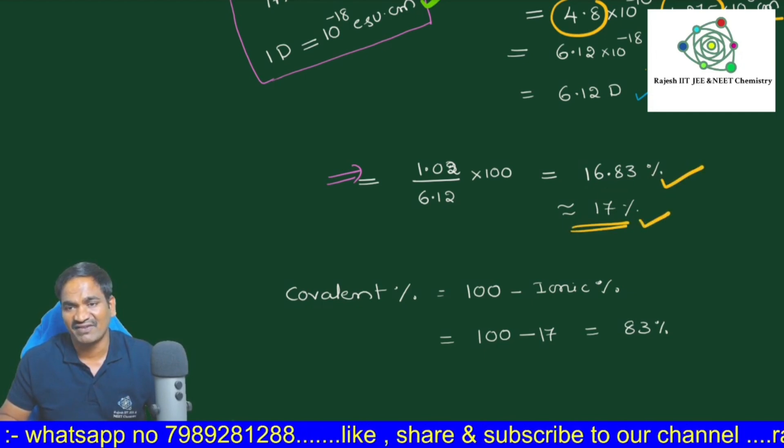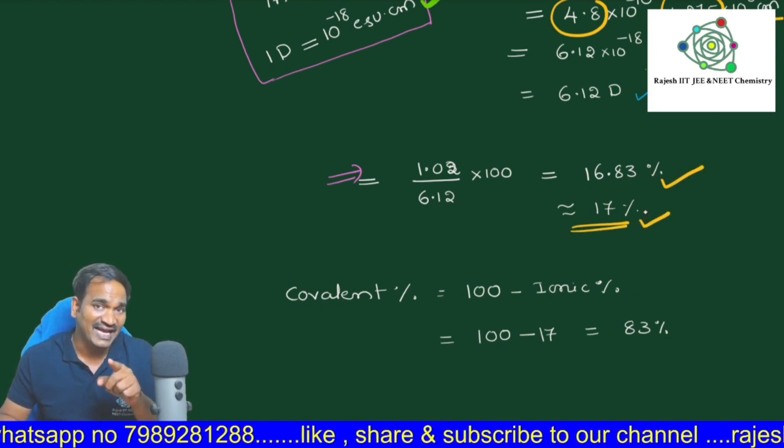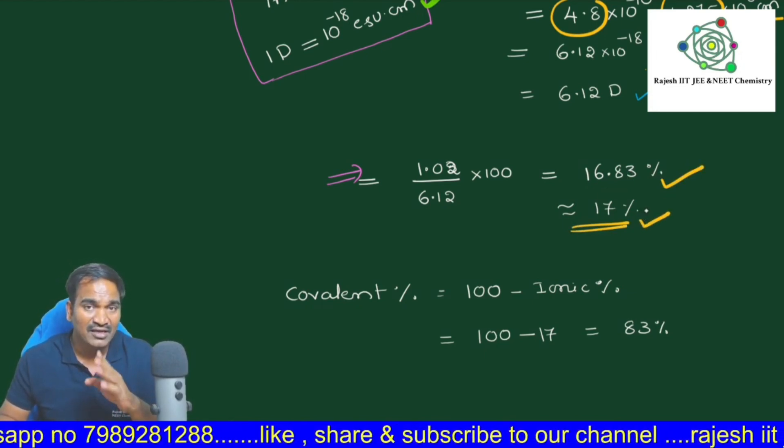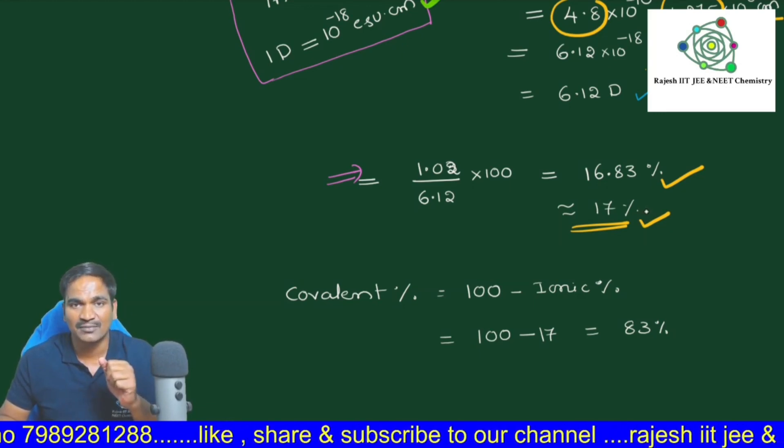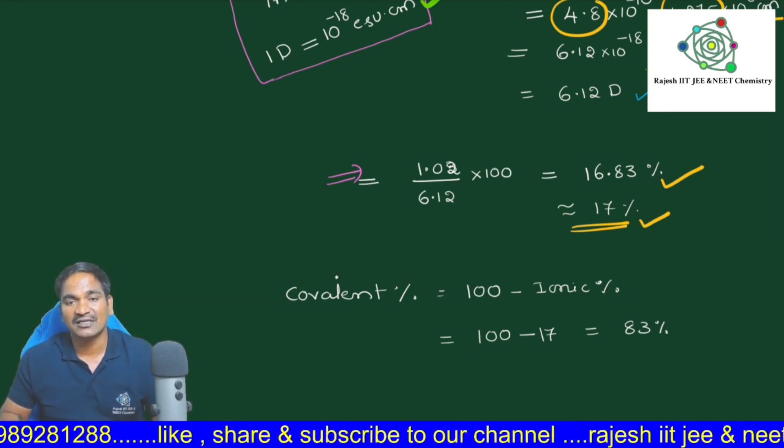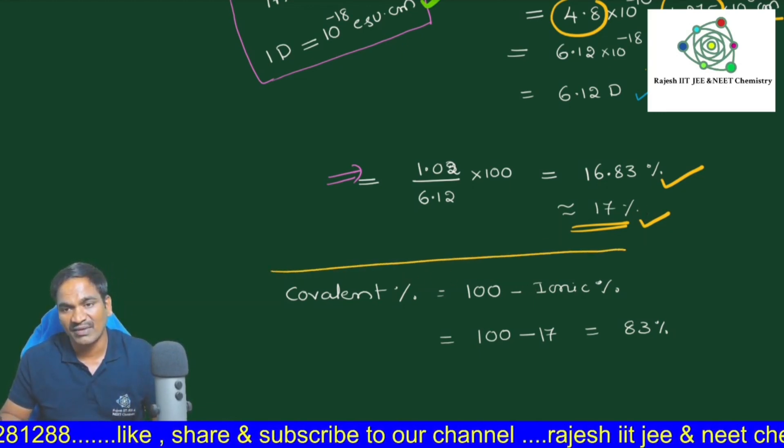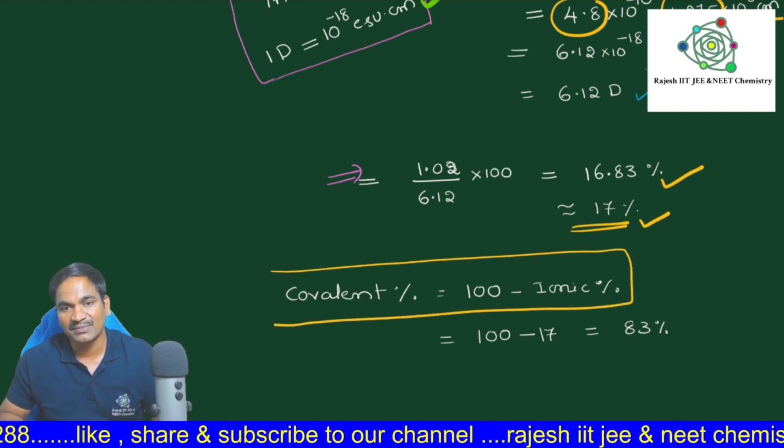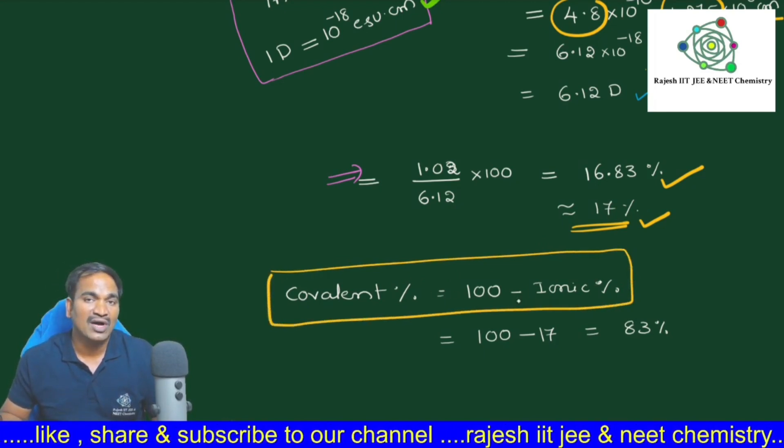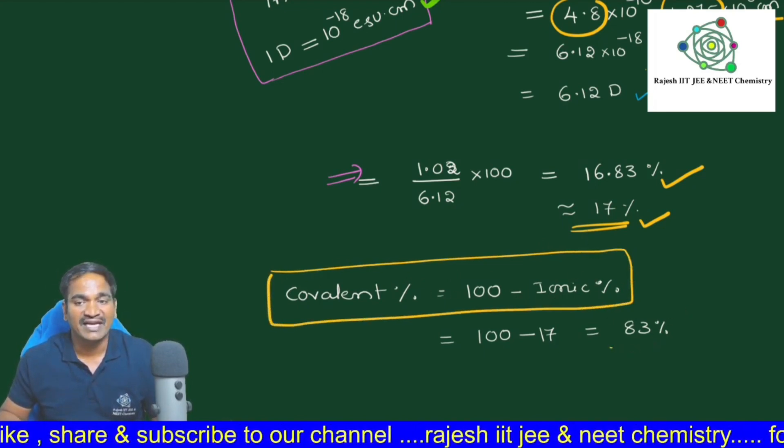This is ionic character, don't forget about that. But they are asking about covalent character. Percentage covalent character is equal to 100 minus ionic character percentage. So 100 minus 17, we are getting 83 percentage.